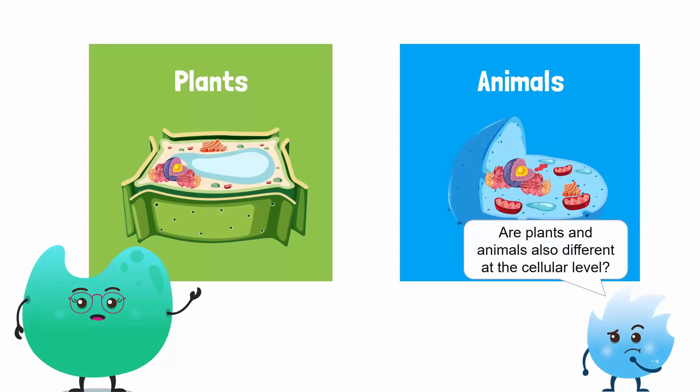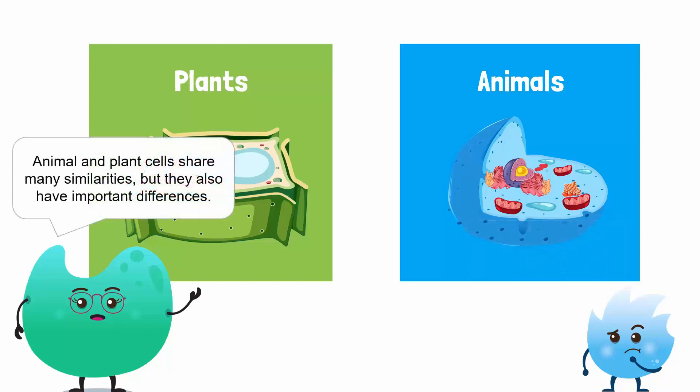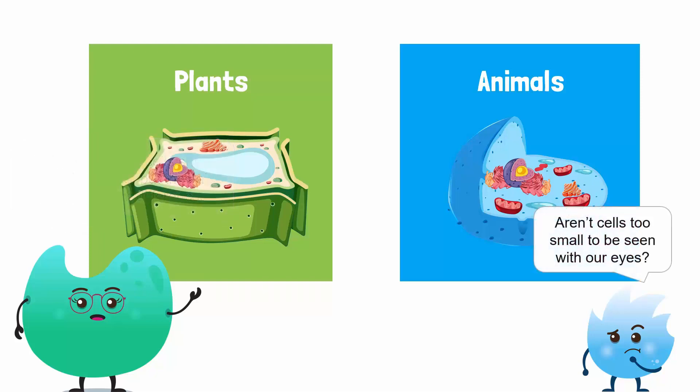I wonder if plants and animals are also different at the cellular level. Although animal and plant cells share many similarities, they also have important differences. Shall we take a look at these differences? How do we do that? Aren't cells too small to be seen with our eyes? You are right, Spikey, which is why we will use a microscope.